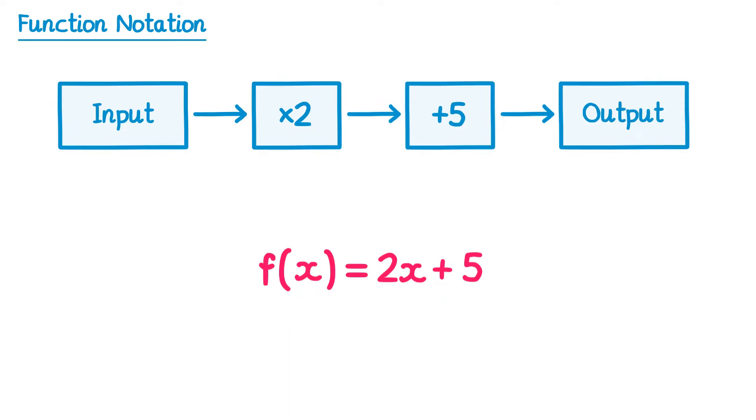The left hand side, f brackets x, we usually pronounce as f of x, which just means there's a function of x. It shouldn't be confused with f times x. There are brackets there but that's not what it means in this case, it's just a way of writing down a function of x.